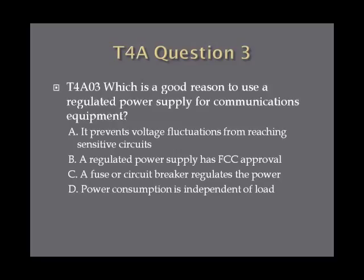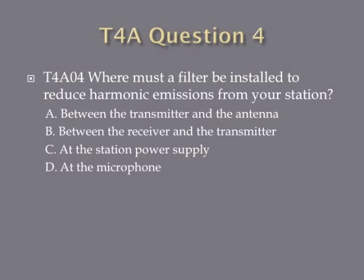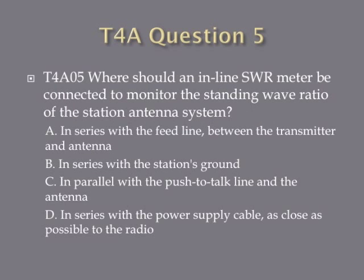Question 3: Which is a good reason to use a regulated power supply for communications equipment? A. It prevents voltage fluctuations from reaching sensitive circuits. B. A regulated power supply has FCC approval. C. A fuse or circuit breaker regulates its power. Or D. Power consumption is independent of load. Question 4: Where must a filter be installed to reduce harmonic emissions from your station? A. Between the transmitter and the antenna. B. Between the receiver and the transmitter. C. At the station power supply. Or D. At the microphone. Question 5: Where should an inline SWR meter be connected to monitor the standing wave ratio of the station antenna system? A. In series with the feed line between the transmitter and the antenna. B. In series with the station's ground. C. In parallel with the push-to-talk line and the antenna. Or D. In series with the power supply cable as close as possible to the radio.